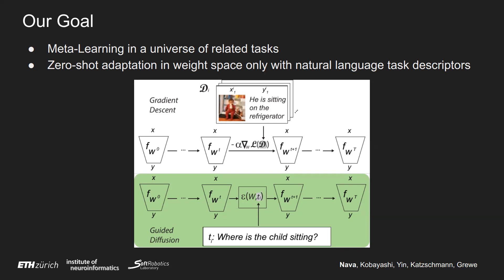What we are doing is meta-learning a procedure Epsilon that would perform a similar kind of adaptation over weights, but only conditioned on TI, a task descriptor that is supposed to describe what the task is, without having access to the overall dataset. So it eventually performs zero-shot adaptation.